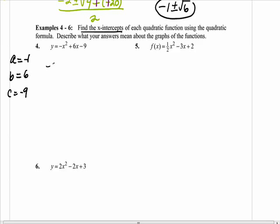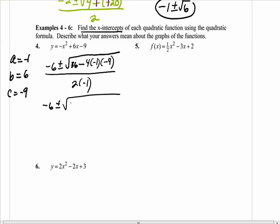It says to find the x-intercepts of each quadratic function. That still means to solve, it's just another way of asking you to solve. Go ahead and plug it into the quadratic formula: negative b plus or minus square root b squared minus 4 times negative 1 times negative 9, all over 2 times negative 1. Negative 6 plus or minus 36. 4 times negative 1 is negative 4, negative 4 times negative 9 is positive 36. And that's over negative 2.